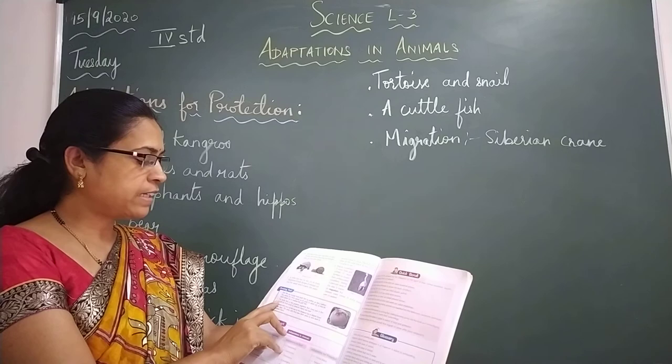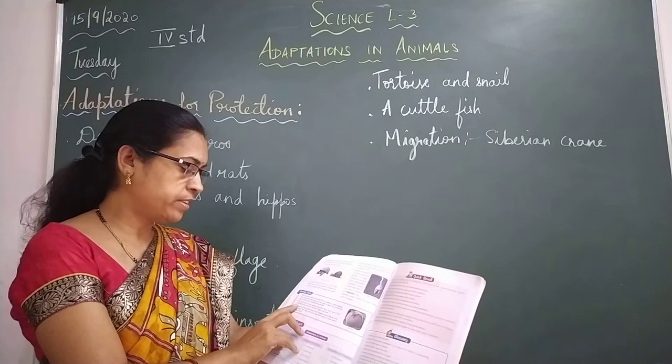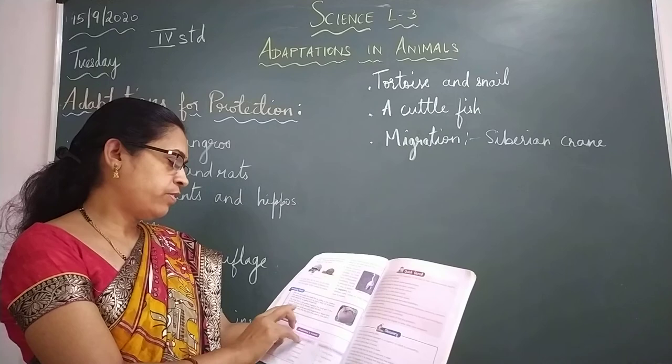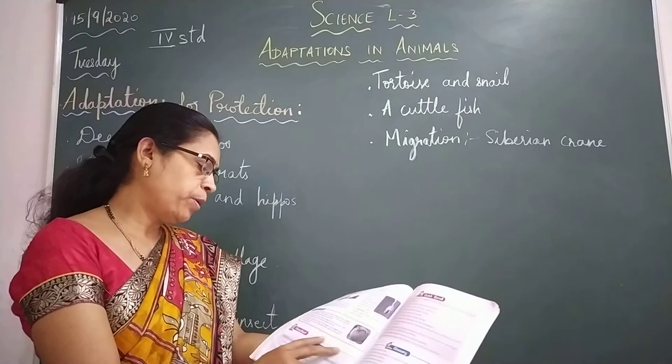Next, the Arctic tern is the greatest migratory bird. Every year it flies 30,000 km from the Arctic to the Antarctic region and back. It is the greatest migratory bird.